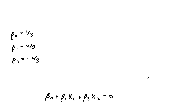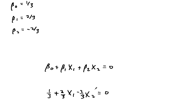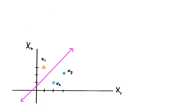Our hyperplane is given by beta0 plus beta1 x1 plus beta2 x2 equals 0. Plugging in our values for beta0, beta1, and beta2, we get this. Solving for x2, we get this — so this is the equation of a line. Looking at the graph, this purple line separates the two classes. This line is the maximal margin hyperplane.